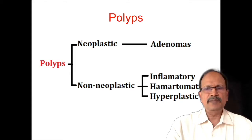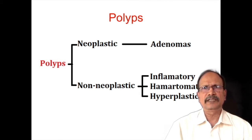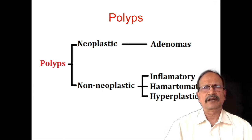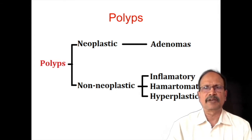Polyps of the GIT can be classified mainly into neoplastic and non-neoplastic polyps. Neoplastic polyps are equated with adenomas. I stress that adenomas of the GIT require a qualifier — that is dysplasia — whereas adenomas in other parts of the body will not have this rider. Non-neoplastic polyps can be due to inflammation, inflammatory polyp, hamartomatous polyp, or hyperplastic variety of polyps.